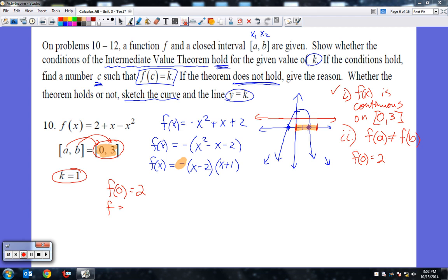Now let's find f of b. f of b is f of 3. If I put 3 into this equation, I can just plug it in. This is a small enough number that I can just plug in and get 2 plus 3 minus 9, and you're going to get negative 4. So f of 3 equals negative 4. These two do not equal each other. 2 obviously does not equal negative 4. So I can continue.